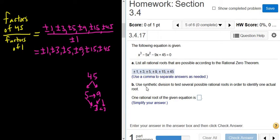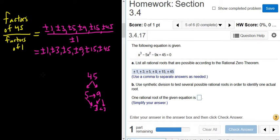All right, use synthetic division to test several possible rational roots in order to identify one actual root. So basically now what you do is you just use synthetic division with these numbers here, with any of these numbers here. I'm going to start by, you're supposed to start by checking 1. But you can see that if I plug in 1 here, I'd get 1 minus 5 minus 9 plus 45. There's no way that's going to be 0.